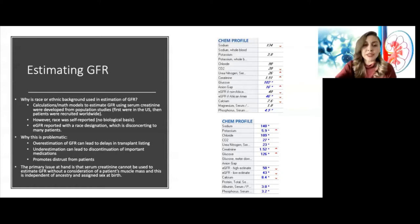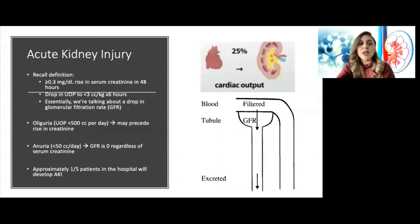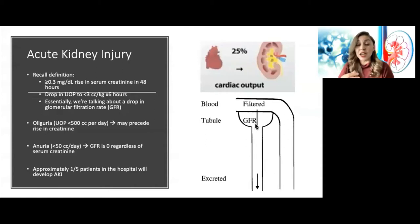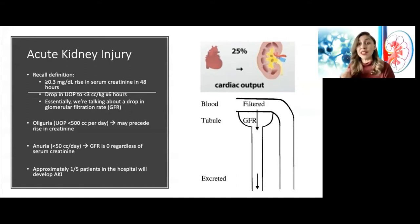Why are we measuring creatinine all the time? Because creatinine is our measure of the glomerular filtration rate — essentially how much the kidney is actually filtering. I use the analogy: the kidney is the washing machine of the body. What we want to know is how many drops of blood per minute is this kidney filtering. When there's an acute kidney injury, there is a drop in the GFR.